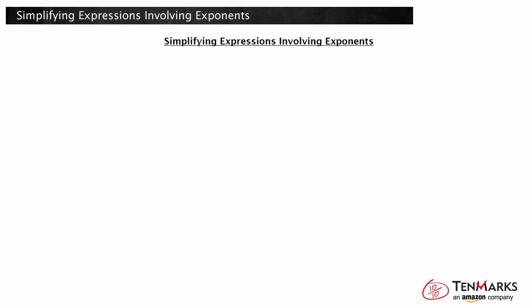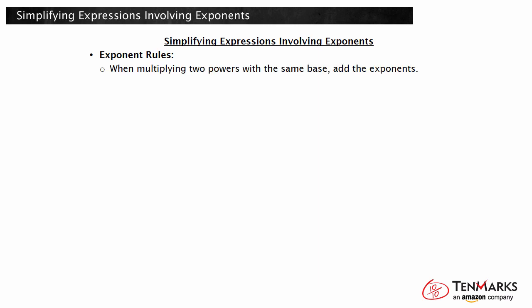There are many exponent rules that make simplifying expressions with exponents easier. For example, when multiplying two powers with the same base, you can add their exponents. 3 to the fifth times 3 to the fourth means 3 is multiplied by itself 9 times. The resulting expression can be written as 3 to the ninth. As you can see, you could have added the exponents 5 and 4 to get the exponent of 9.